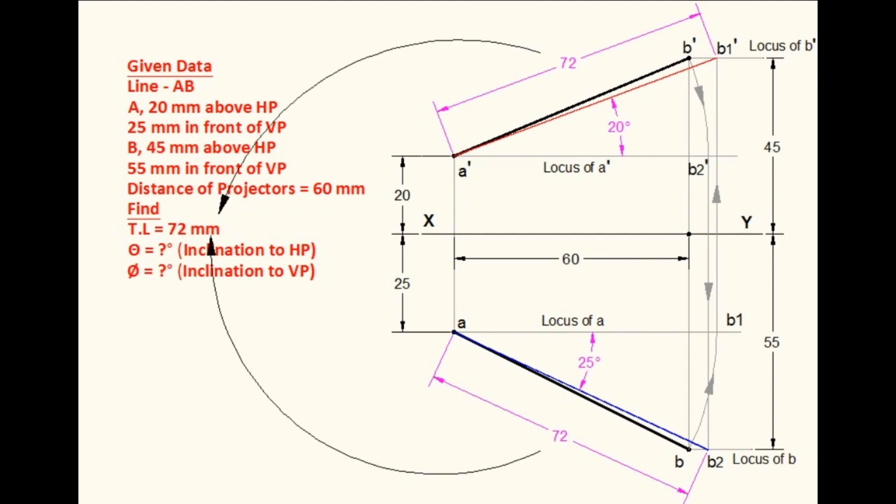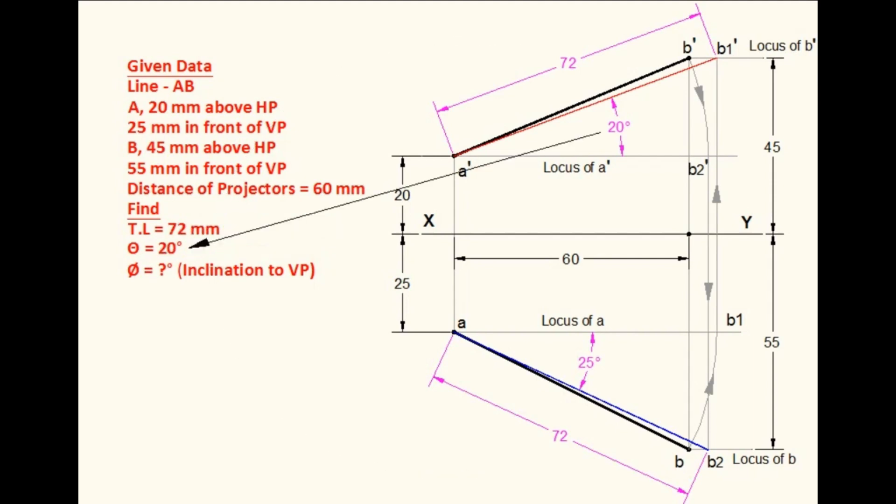While measuring, the true length of the line is 72mm. Inclination of the line with HP, theta, is 20 degrees. Inclination of the line with VP, phi, is 25 degrees.